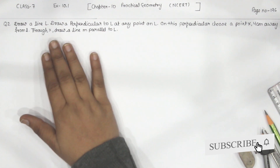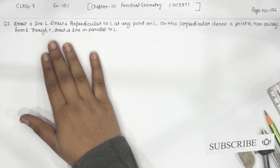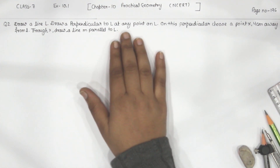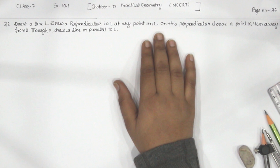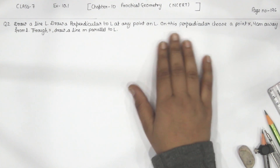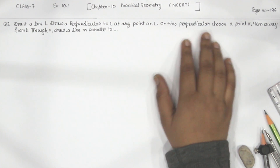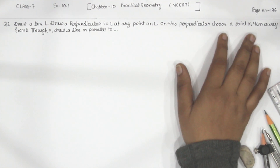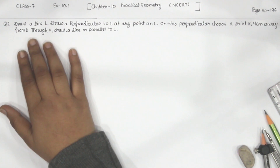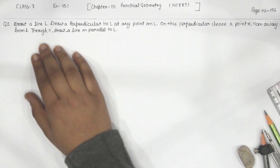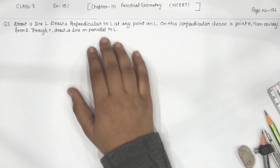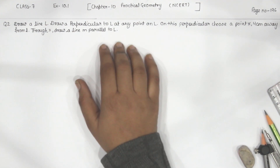Draw a line L, draw a perpendicular to L at any point on L. On this perpendicular, choose a point X 4 cm away from L. Through X, draw a line M parallel to L.